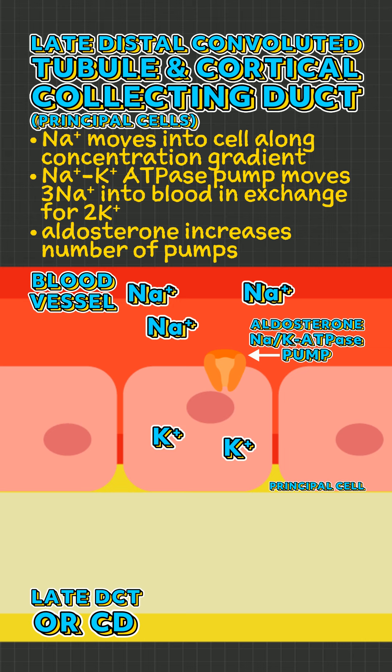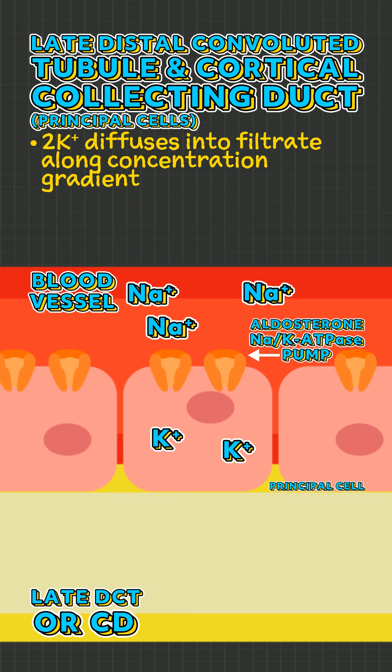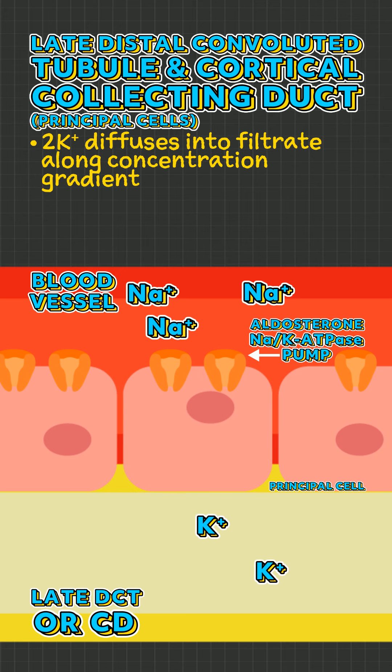Aldosterone has receptors here that increase the number of these pumps present. Potassium then diffuses into the filtrate along its concentration gradient.